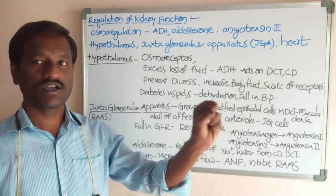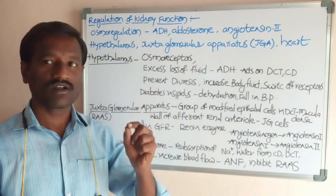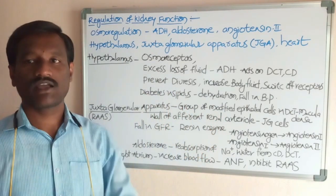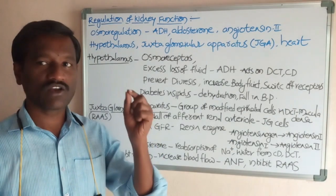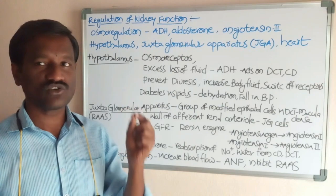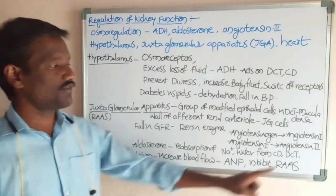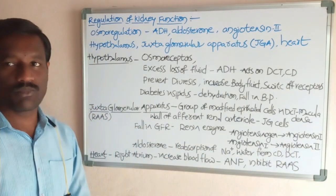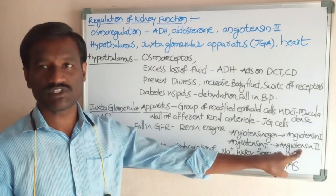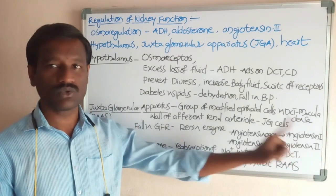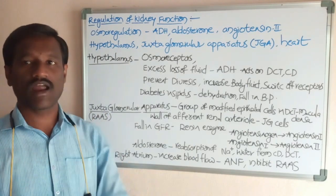The conversion of angiotensin 1 to angiotensin 2 occurs in the region of the lungs, where the angiotensin-converting enzyme (ACE) is present. Finally, angiotensin 2 is produced in the blood and acts on the adrenal gland.